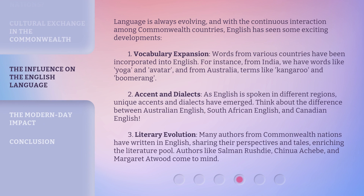Language is always evolving, and with the continuous interaction among Commonwealth countries, English has seen some exciting developments. First, Vocabulary Expansion: words from various countries have been incorporated into English. For instance, from India we have words like yoga and avatar, and from Australia, terms like kangaroo and boomerang.